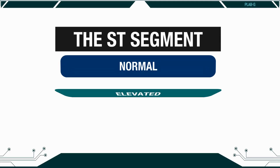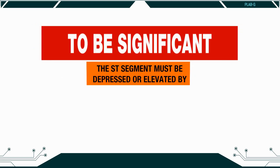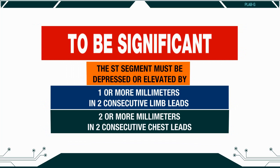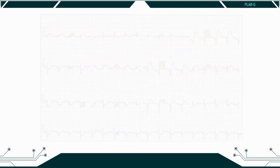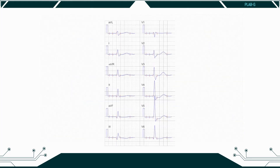The ST segment can be normal, elevated or depressed. To be significant, the ST segment must be depressed or elevated by 1 or more millimeters in 2 consecutive limb leads, or 2 or more millimeters in 2 consecutive chest leads. You also have to look out for reciprocal changes. ST elevation indicates infarction and ST depression is normally due to ischemia. ST segment depression may also be seen in digoxin toxicity, where the ST depression will be downsloping, sometimes known as the reverse tick sign.